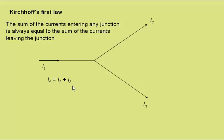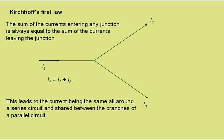This is a simple consequence from the conservation of charge, that as no charge is going to enter or leave the wires, whatever comes along here has got to go up there or along there. This leads to the current being the same all the way around a series circuit, and being shared between the branches of a parallel circuit.